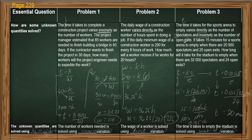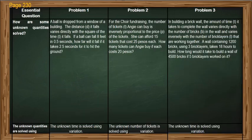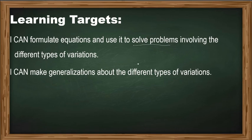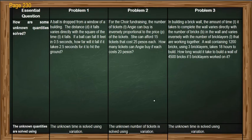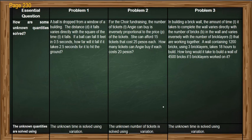For your independent practice, answer the test for understanding on page 230 of your book. This is meant for checking and recording, so you're going to upload it in our system — it's part of your output. Answer it similarly to what we did in the previous problems. Let's review the learning targets: can you formulate equations and use them to solve problems involving different types of variations? Can you make generalizations about the different types of variations? Good luck on your assessment. See you in our next lesson. Goodbye.